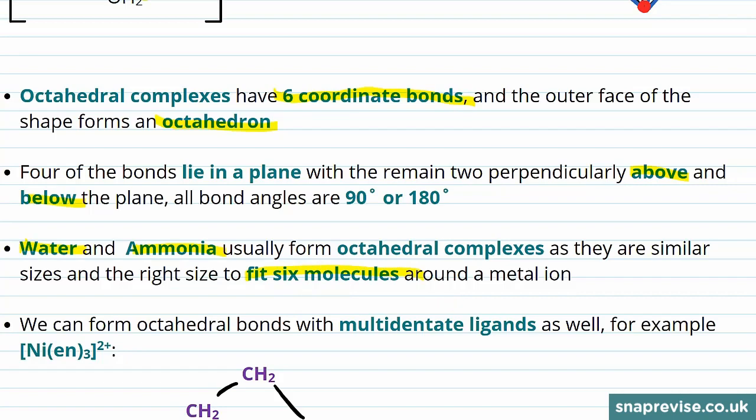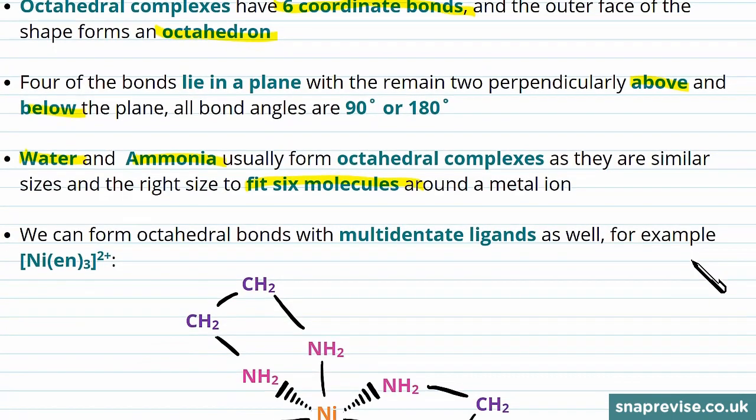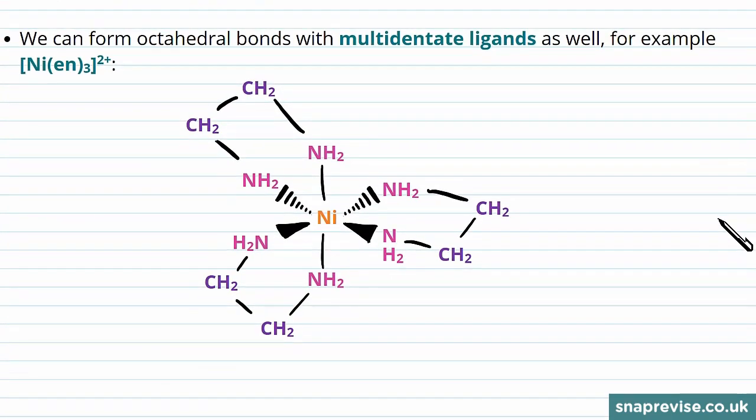It's not just monodentate ligands, however, that can form octahedral complexes. We can form octahedral bond structures with multidentate ligands as well. For example, here, where we've got nickel with three EN, which, remember, is ethane 1,2-diamine.